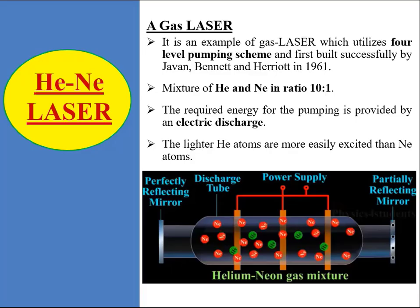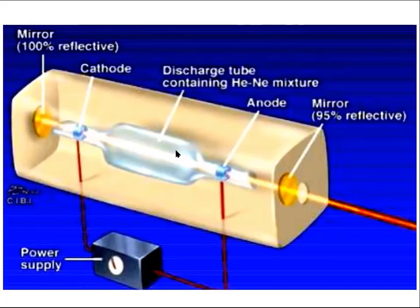After ruby laser, let us discuss an example of a gas laser: the helium-neon laser. In the helium-neon laser, the active medium is a mixture of helium and neon gases in the ratio of 10:1. This is filled in a quartz tube placed between two parallel mirrors, one of which is fully reflecting and the other is partially reflecting. The required energy for pumping is provided by an electrical discharge. The power supply drives the electrical discharge in the tube, and the two mirrors provide the laser cavity.